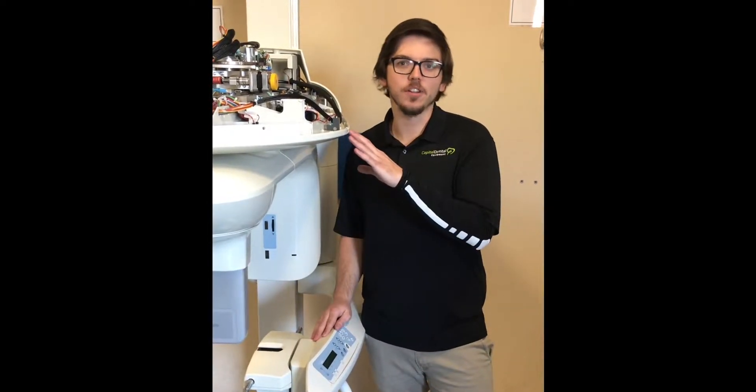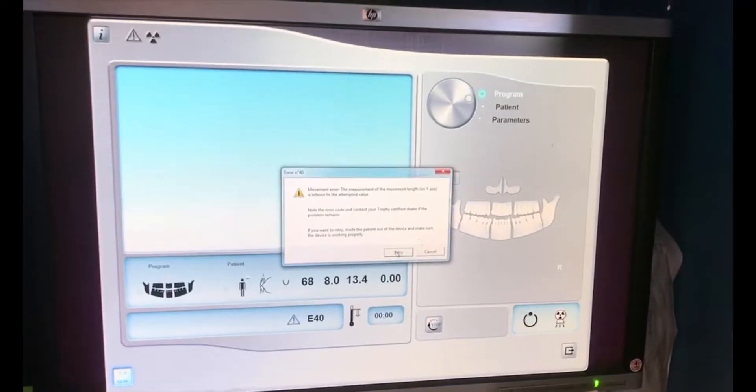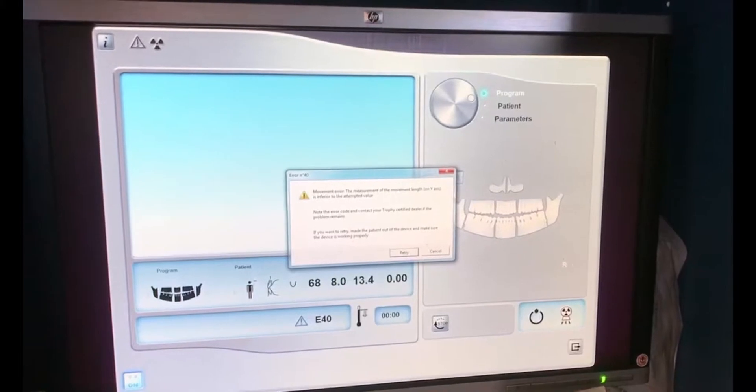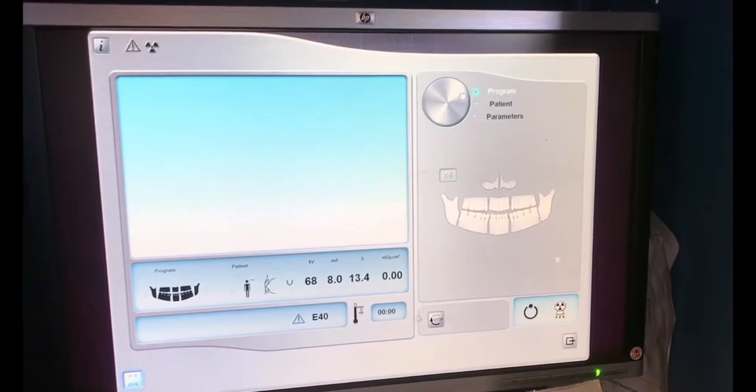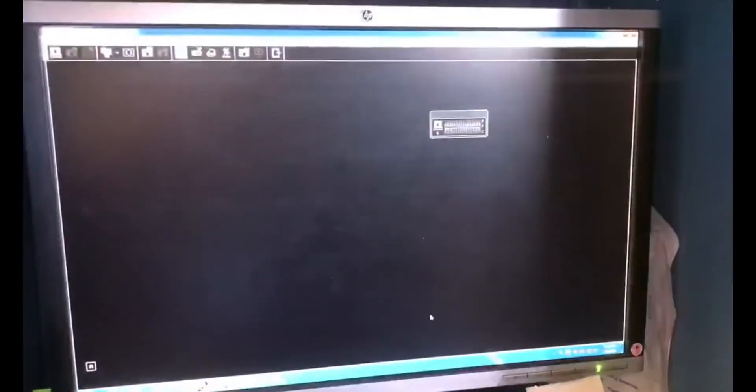This is a common error where the machine basically forgets its home positions. When you receive this error, the first thing you're going to do is open up the acquisition window on the computer. You should see a little error box pop up. You're going to hit retry to clear that out.